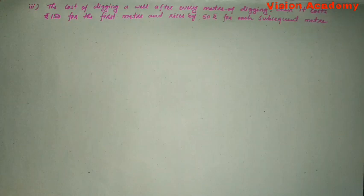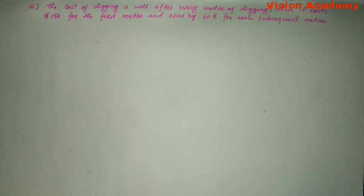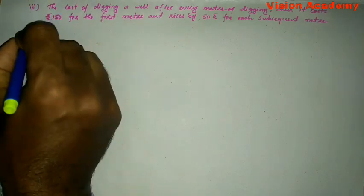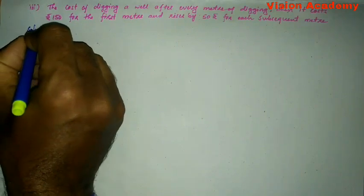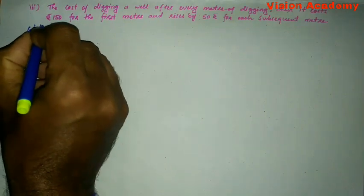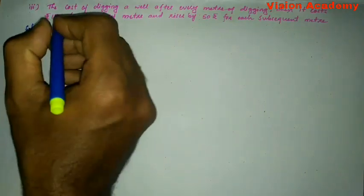Now let us consider the third question: The cost of digging a well after every metre of digging when it costs Rs. 150 for the first metre and rises by Rs. 50 for each subsequent metre. Let us find the solution for the given problem.